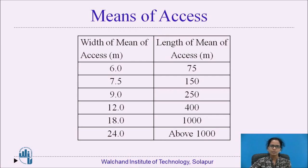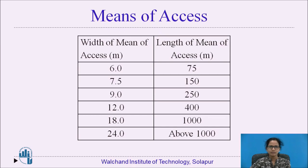Next, we have the pathway. The approach to a building or plot from the internal means of access shall be provided from the pathway. The width of the pathway should not be less than 1.5 meters.